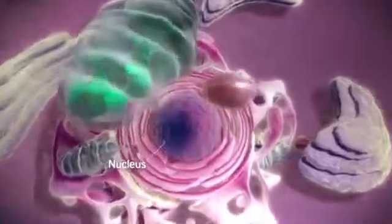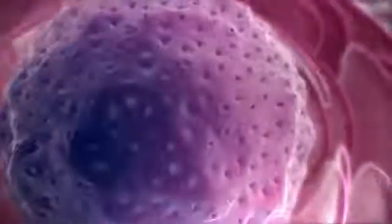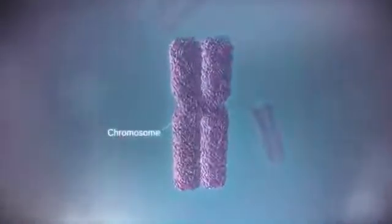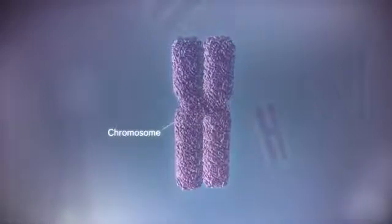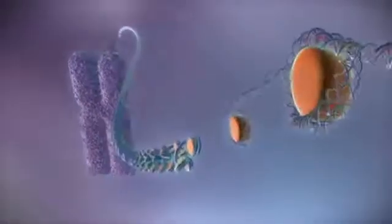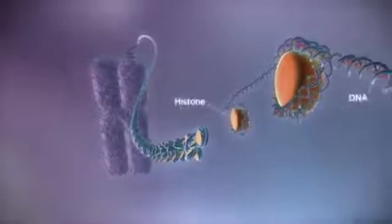The nucleus contains the genome. In humans, the genome is split between 23 pairs of chromosomes. Each chromosome contains a long strand of DNA, tightly packaged around proteins called histones.